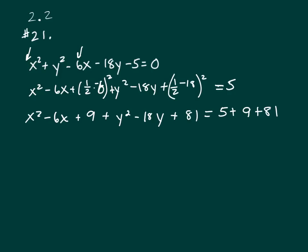So now let's factor. That's X minus 3 squared plus Y minus 9 squared equals 81 plus 14. That's 95. So we know the center is 3, 9.